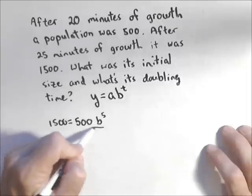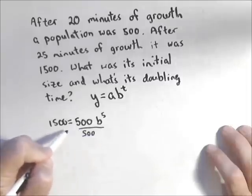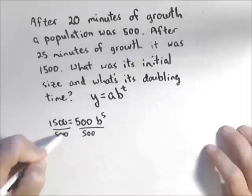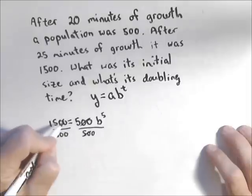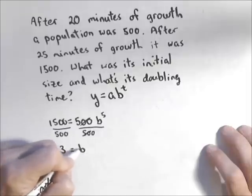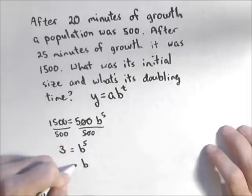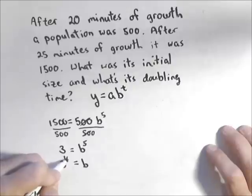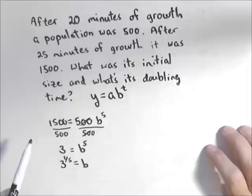I'm going to divide both sides by 500, and I get that three equals b to the fifth, or that b equals, we raise both sides to the one-fifth, so three to the one-fifth. There's the base of my exponential for this model.